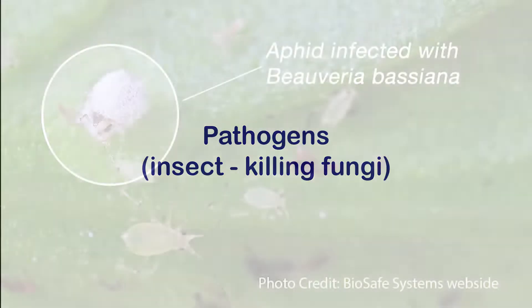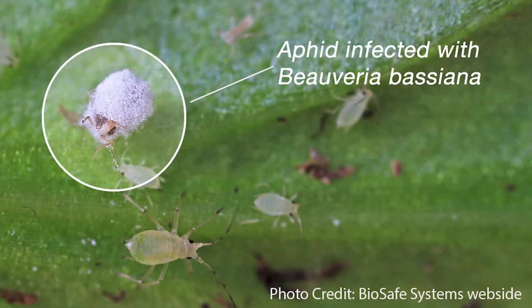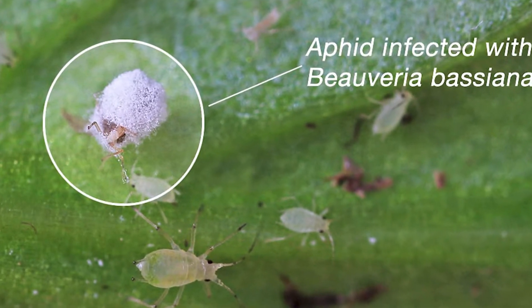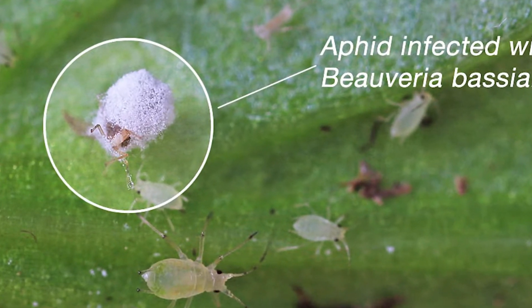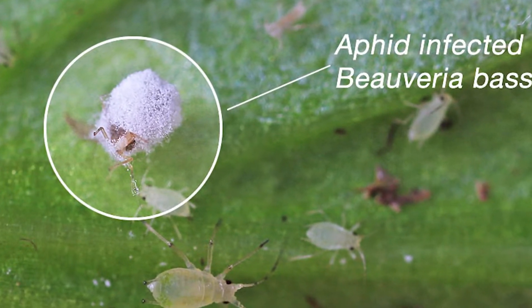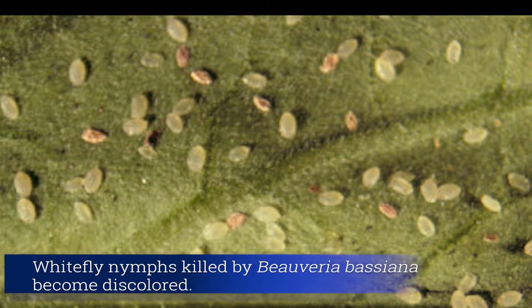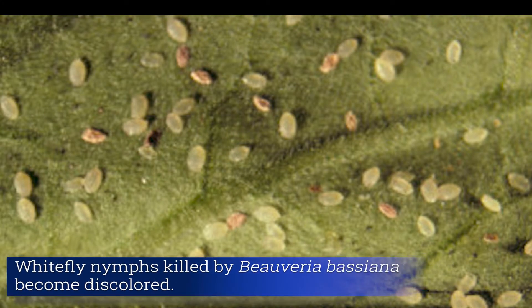Pathogens include insect-killing fungi, such as Beauveria bassiana, that use enzymes to dissolve the insect cuticle, using the insect as a food source.